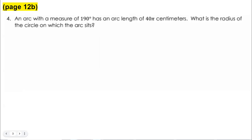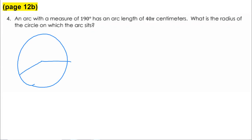We're looking at page 12b. We're going to start with number four together. This says that an arc has a 190-degree arc measure and an arc length of 40π centimeters, and we want to know the radius of the circle. So what we have here is a circle with a 190-degree arc, and the arc length is 40π centimeters — we want to find r.